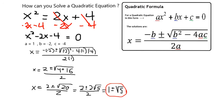To get a better sense of this, I can use a decimal approximation. Since the square root of 5 is about 2.2, this means about negative 1.2 or positive 3.2.